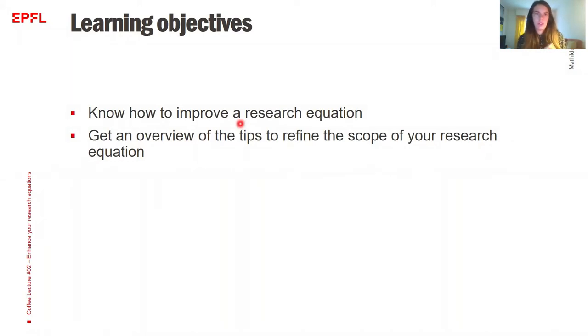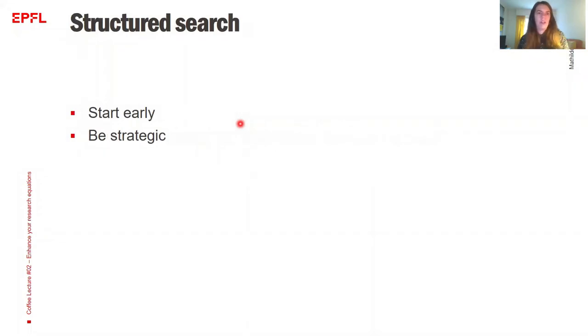This session is recorded but for the question part that will be at the end, I will stop the recording. So the kind of research or search I'm talking about today is a structured search, something that you want to do a bit thoroughly at the beginning of a project, maybe it can be for a literature review or just for you to be informed on the latest publication on the topic. And you might have the impression that you know a lot in your field already, you have been working there for a while, but it's good to check that you didn't miss any publication.